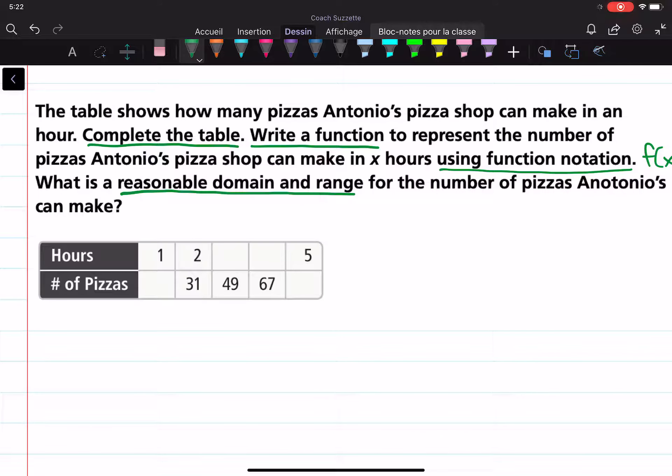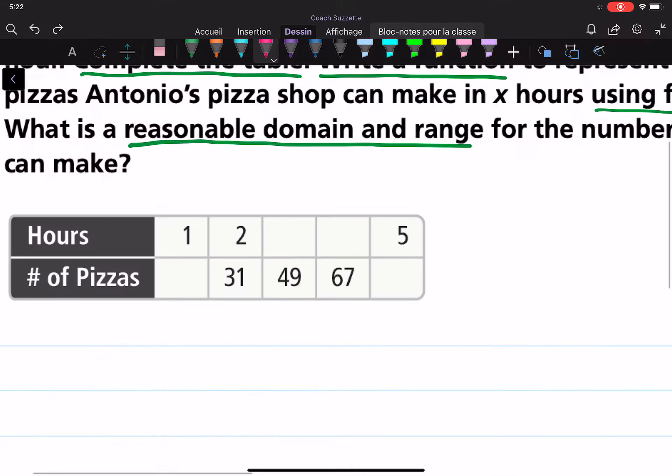The number of pizzas they can make in however many hours. Okay, so let's start with completing the table. This top row here for the number of hours, that's our domain. It goes one, two, blank, blank, five. So blanks are probably three and four.